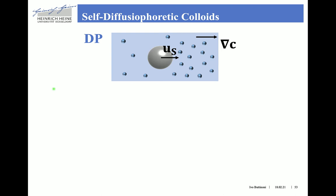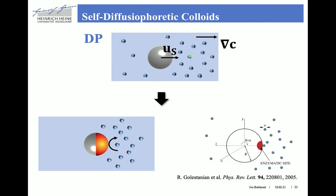We now move on to diffusiophoresis: homogeneous particles migrate up a concentration gradient of solutes due to diffusiophoretic transport. If we switch from diffusiophoresis to self-diffusiophoresis, this means that particles are able to generate themselves a concentration gradient by means of some sort of reactive sites on the surface of the colloid — for example, a bead equipped with an enzymatic patch able to produce product particles at a given reaction rate.